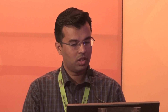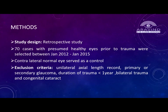The aim of our study was to analyze the factors statistically associated with changes in axial length in traumatic eyes. The methods: it was a retrospective study. We selected 70 cases with presumed healthy eyes prior to trauma, from January 2012 to 2015. The contralateral normal eye served as a control.